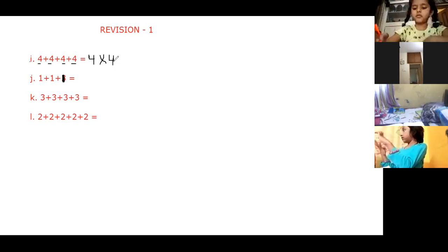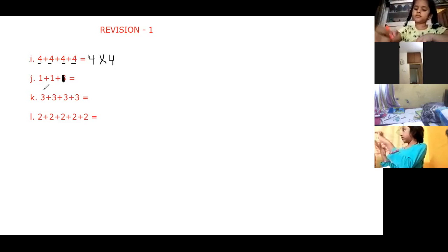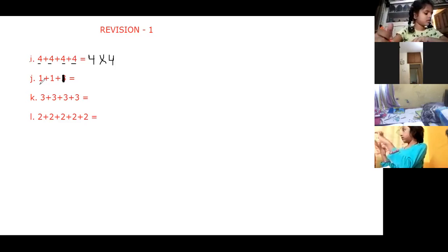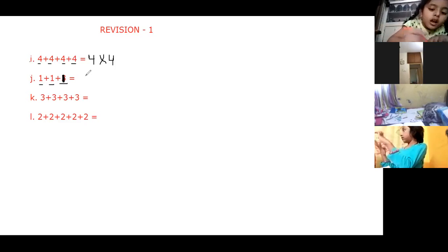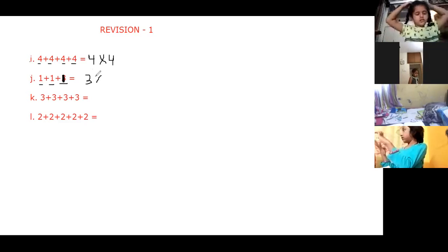Ketan, in the next question — bit J — how many times are we repeating that number? Four times. No, count again. One, two, three — we are repeating it one, two, and three times. Three times. Yes. So after writing three, we will put the multiplication symbol. And which number are we repeating here?